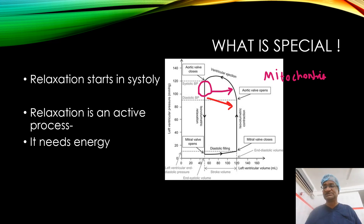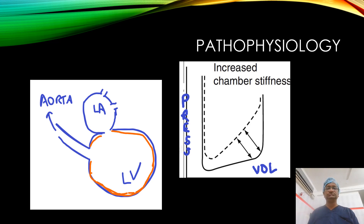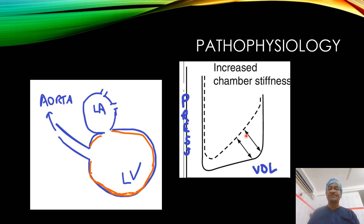There are two important things about diastole: relaxation actually starts at the mitochondrial level during systole, and relaxation itself needs energy - it is an active process. On the pressure-volume relationship, when the LV gets stiff due to diastolic dysfunction, as volume rises the pressure rises very high. This is reduced compliance or stiffness. The LV chamber stiffness is high and it needs atrial systole to fulfill filling.